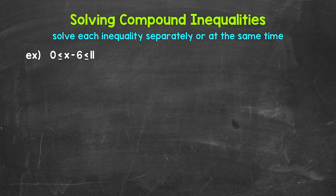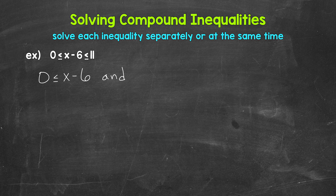Let's start by separating this into the two inequalities that make up the compound inequality. This way helps us break everything down, understand a little more, and stay a little more organized. So we have 0 is less than or equal to x minus 6 and x minus 6 is less than or equal to 11.